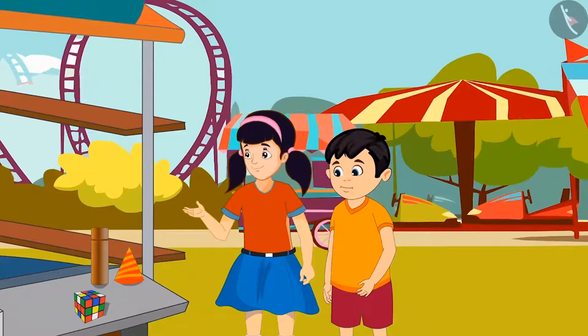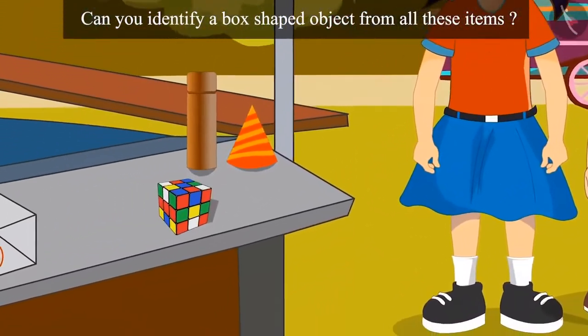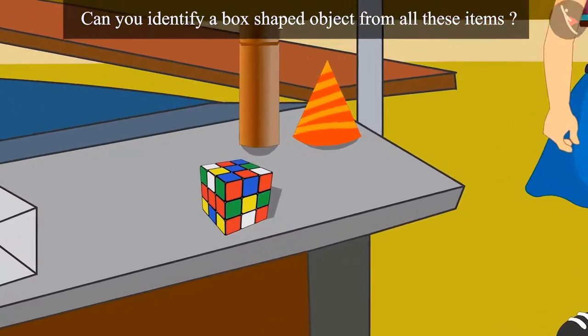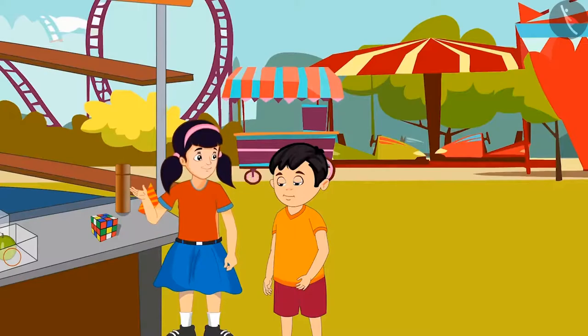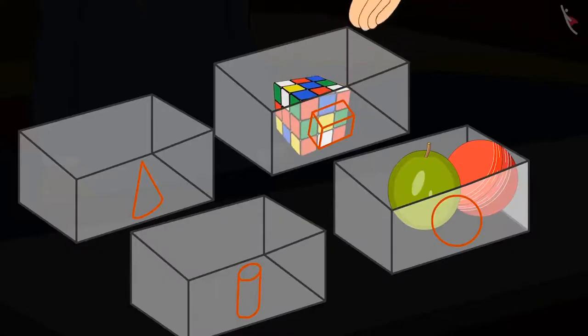Come on, Chotu. Now, let's look for items that has box-like shape. Children, can you identify a box-shaped object from all these items? Right, children. Here is an object which looks like a box. Got it. Here it is. Now, let's put it in this box.